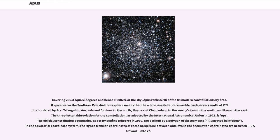Covering 206.3 square degrees and hence 0.5002% of the sky, Apus ranks 67th of the 88 modern constellations by area. Its position in the Southern Celestial Hemisphere means that the whole constellation is visible to observers south of 7 degrees north. It is bordered by Ara, Triangulum Australe and Circinus to the north, Musca and Chamaeleon to the west, Octans to the south, and Pavo to the east.